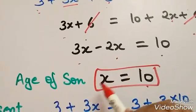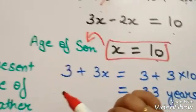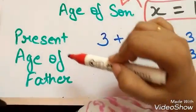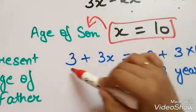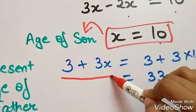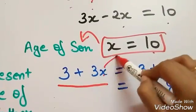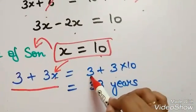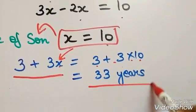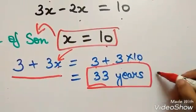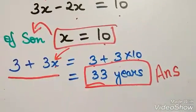X is the age of son, but we have to find the present age of father, which is equal to 3 plus 3x. So just substitute the value of x: 3 plus 3 into 10 equals 33 years. That is the present age of father, which is your answer.